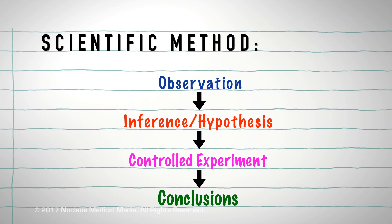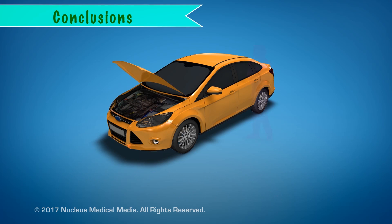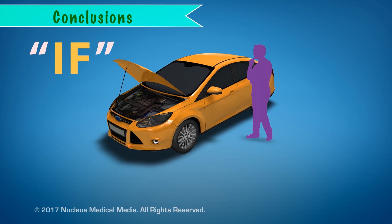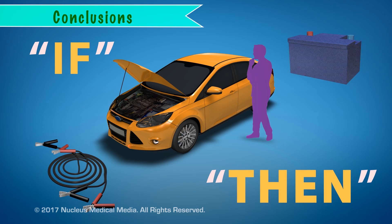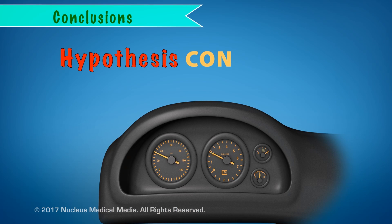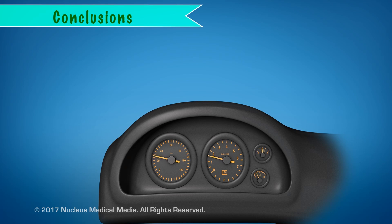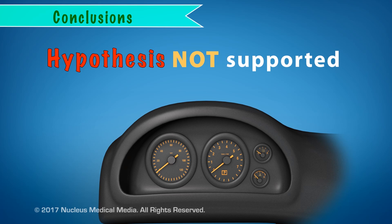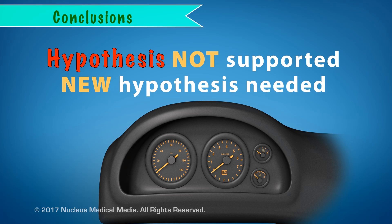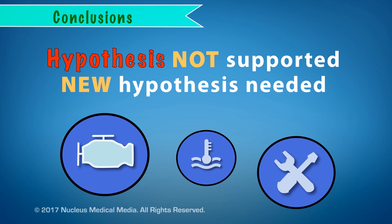After completing your experiment, you can draw a conclusion by using the resulting data to see if it supports your hypothesis. Remember, your hypothesis was: if my car starts when I use jumper cables, then the battery is the problem. The results of the experiment confirmed the hypothesis, so the conclusion is that the battery was the problem. If your car didn't start when using jumper cables, then your original hypothesis was not supported. As a result, a new hypothesis needs to be formed and tested. The scientific method continues until no more options remain.